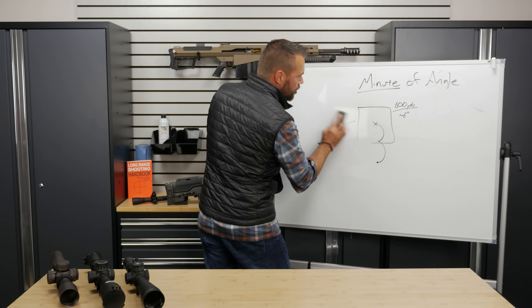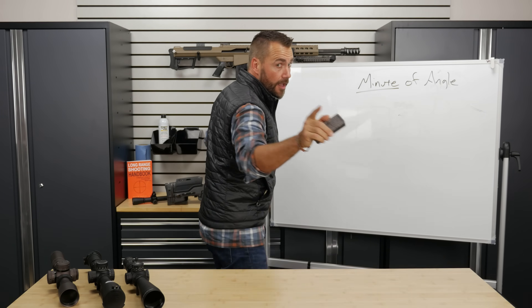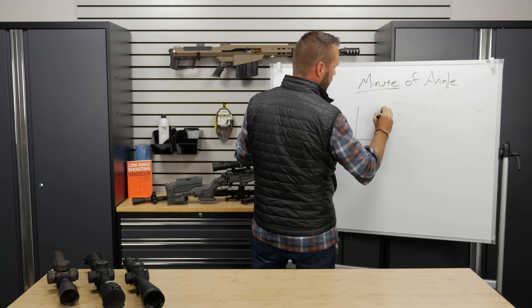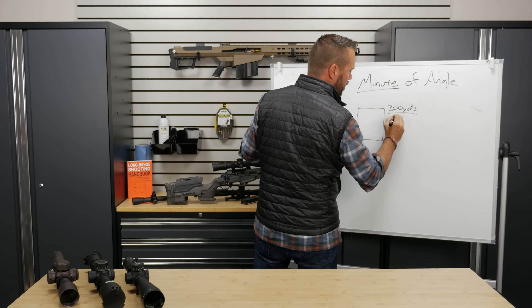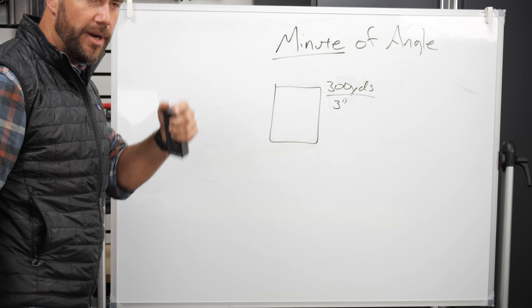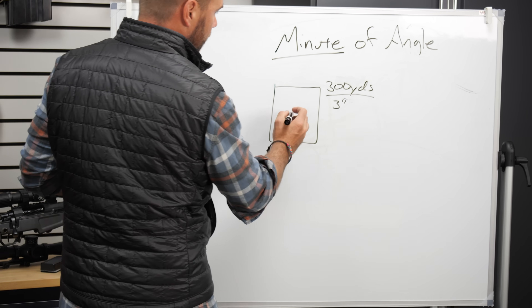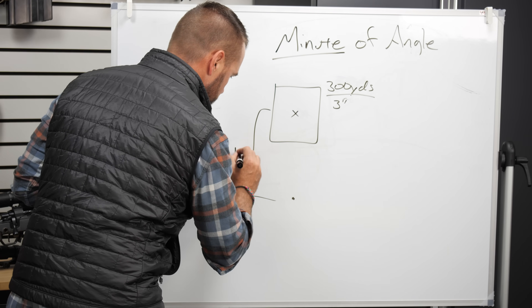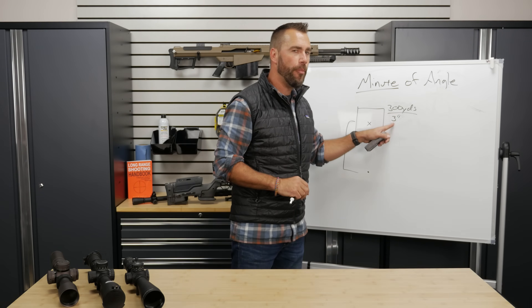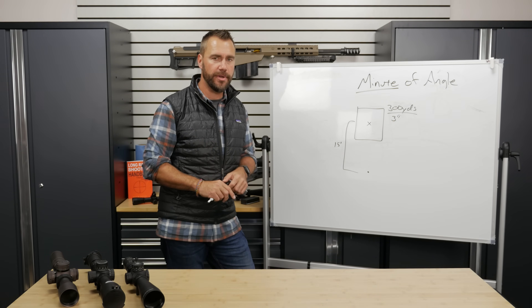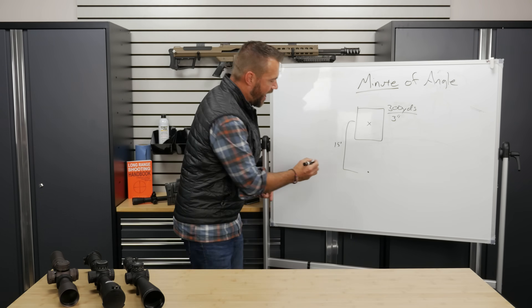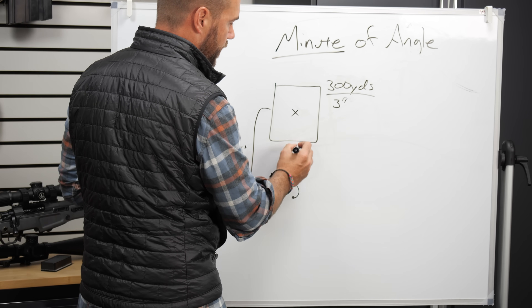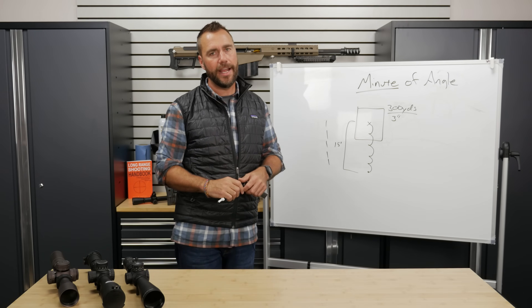Let's try another example. We're shooting at 300 yards — so your brain should automatically go to 3-inch chunks. You're trying to aim at the center, but you hit 15 inches low. How many minutes of angle do you need to come up? How many 3-inch chunks fit into that 15-inch measurement? Five of them. So I come up five minutes of angle on my scope — one, two, three, four, five — I shoot again and hit the target in the center. We're using angular measurements that change with distance but allow us to move the barrel orientation to get the hits where we want.